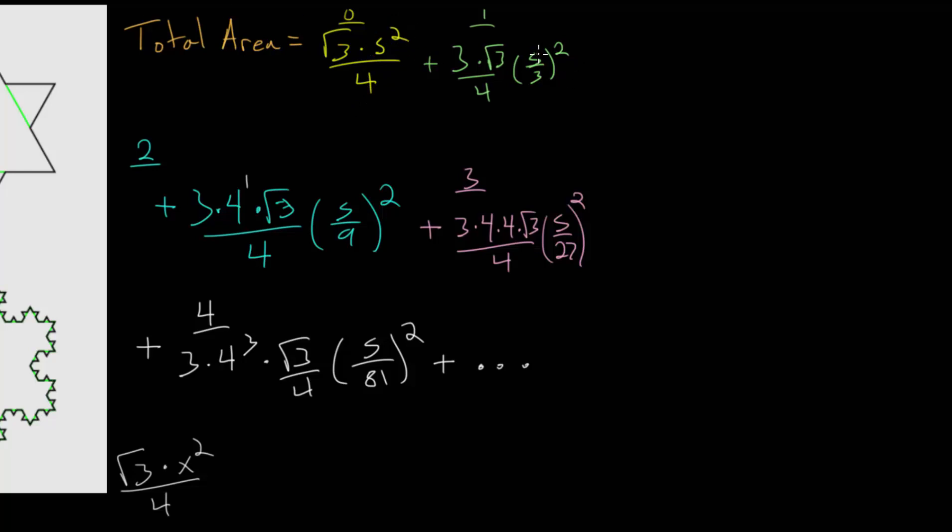Since for each of these factors in each of the terms, when we actually square this out we will end up with s squared at least in the numerator. So we can start by factoring out the square root of 3, s squared, and this division by 4.